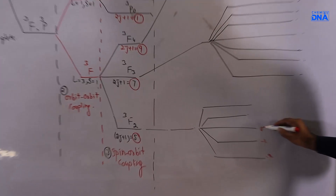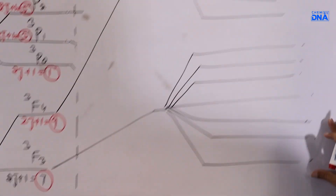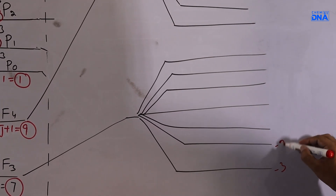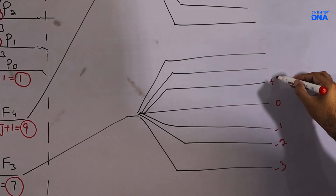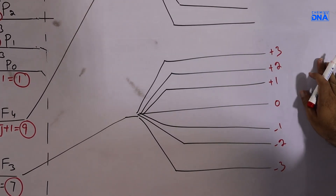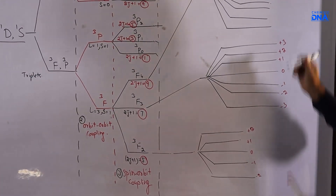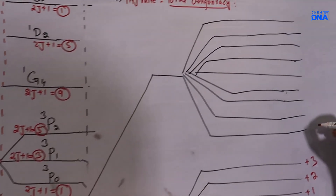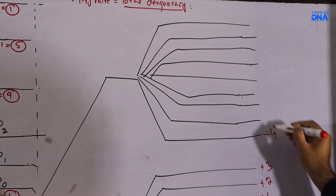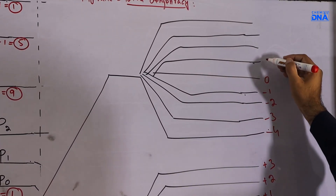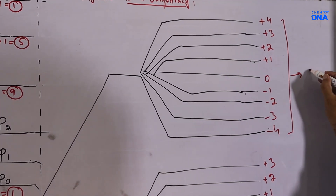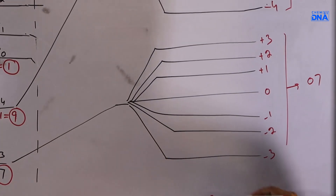For ³F₃, the mJ values are: −3, −2, −1, 0, +1, +2, +3 — 7 separating patterns. For ³F₄ you get 9 splitting patterns with mJ values: −4, −3, −2, −1, 0, +1, +2, +3, +4. So overall: ³F₄ gives 9, ³F₃ gives 7, and ³F₂ gives 5.